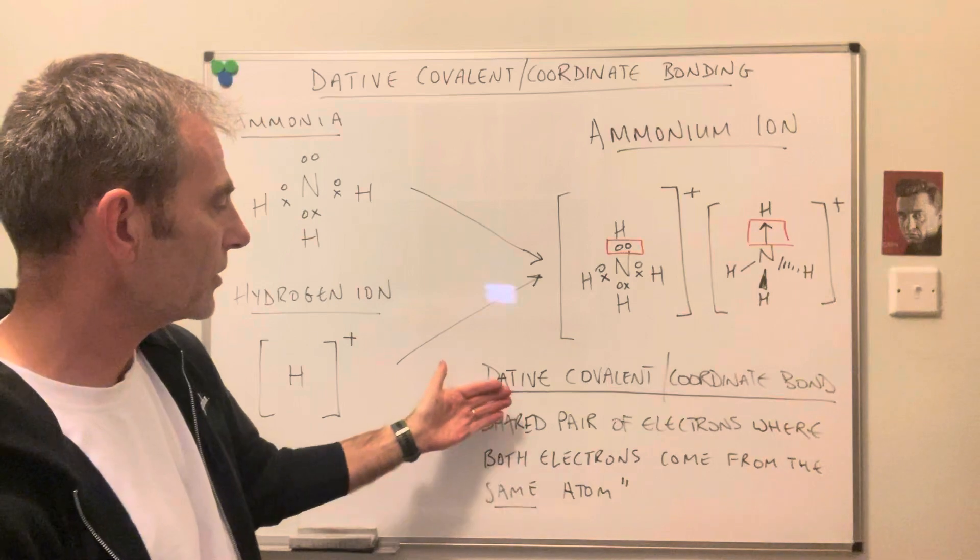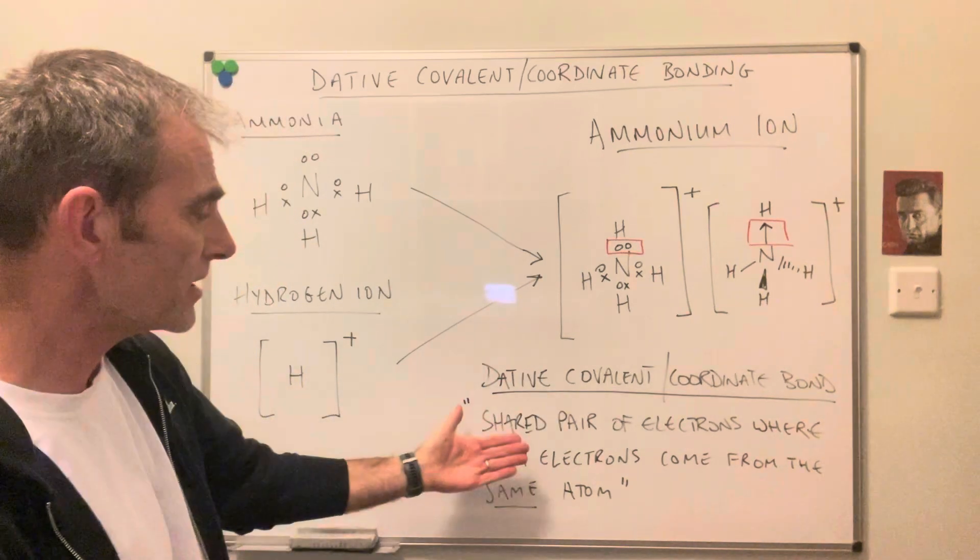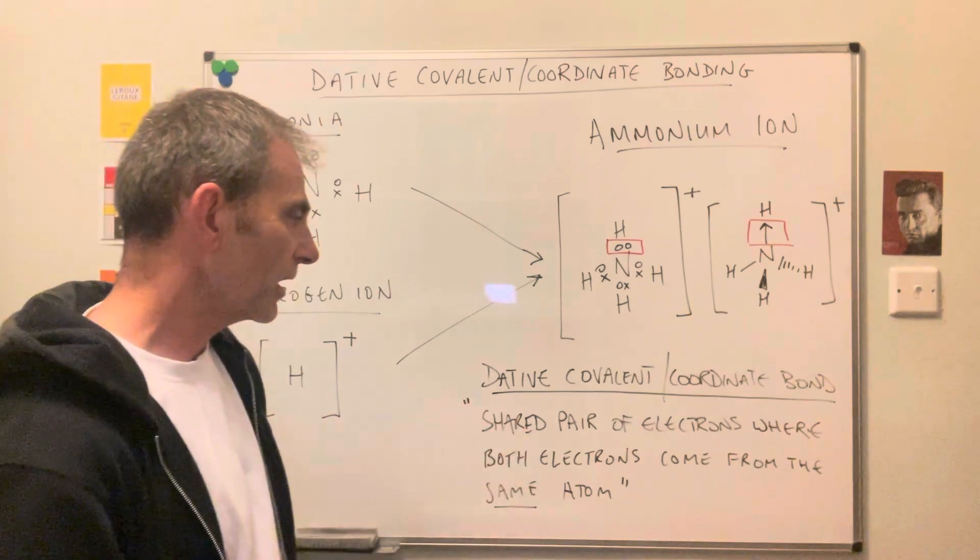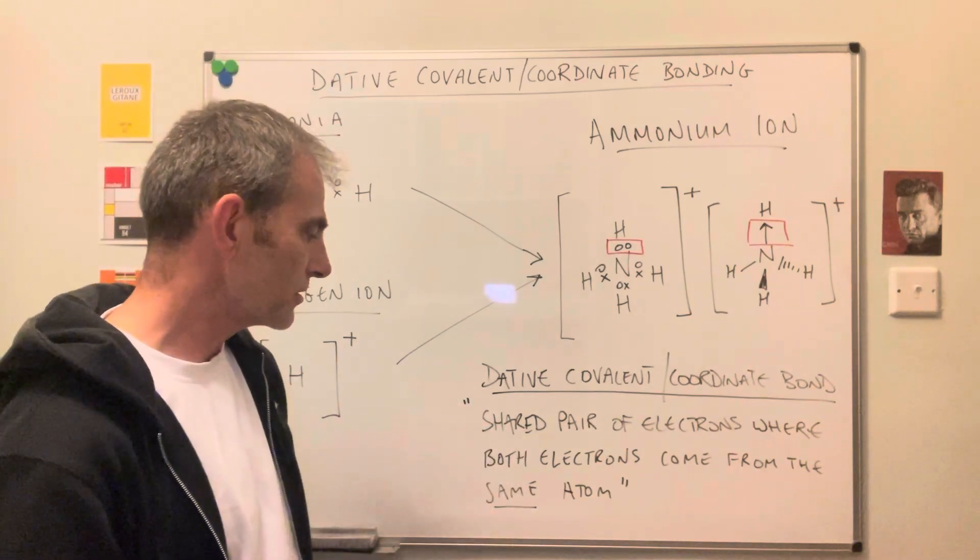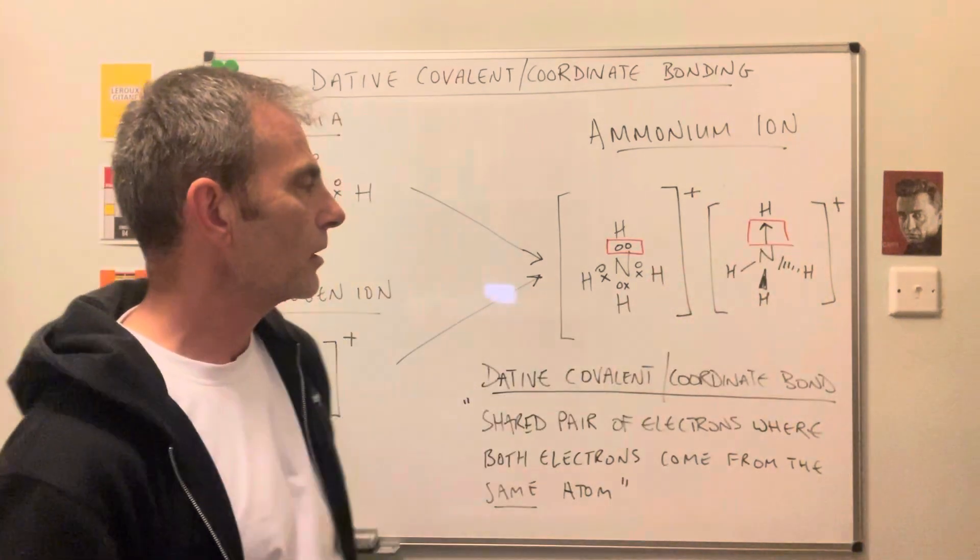The dative covalent or coordinate bond. So there's the definition for it: shared pair of electrons where both electrons come from the same atom. And if you were to draw a displayed formula for an ammonium ion.